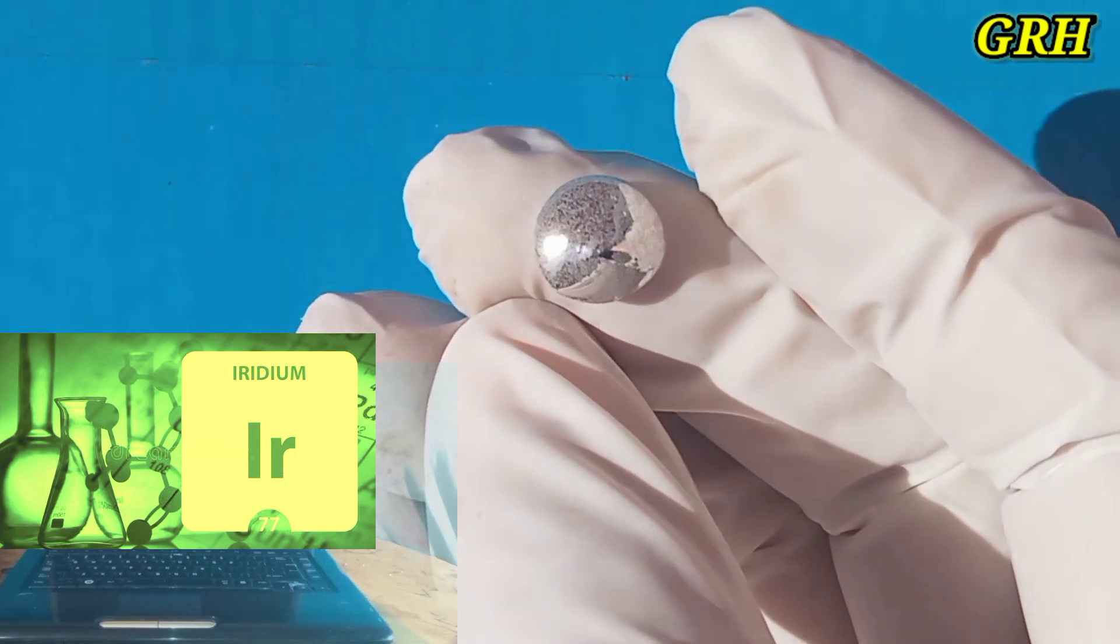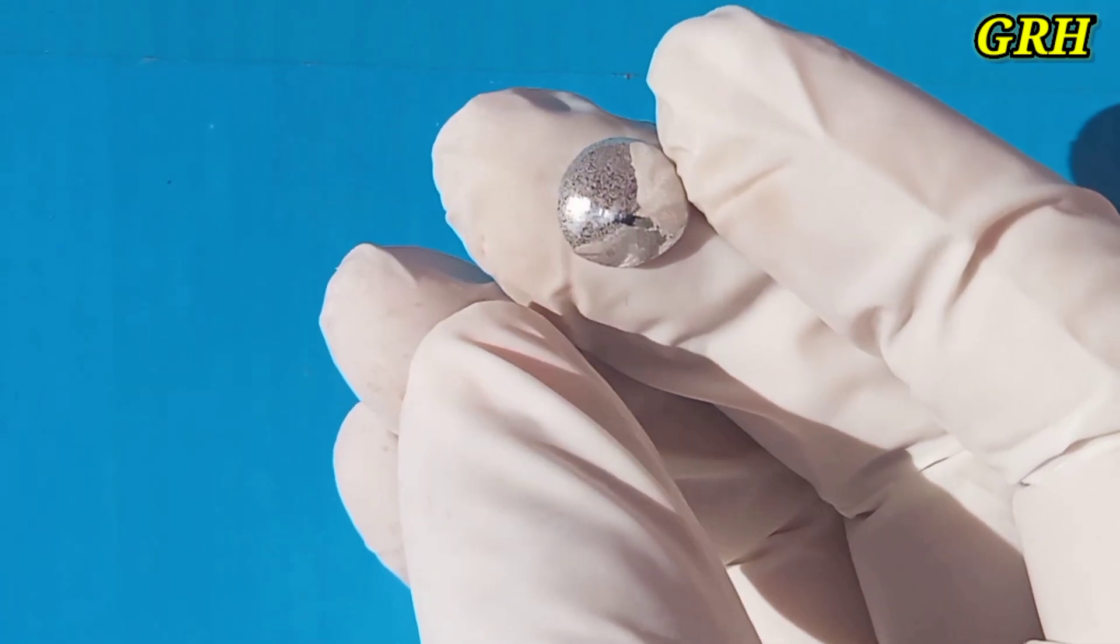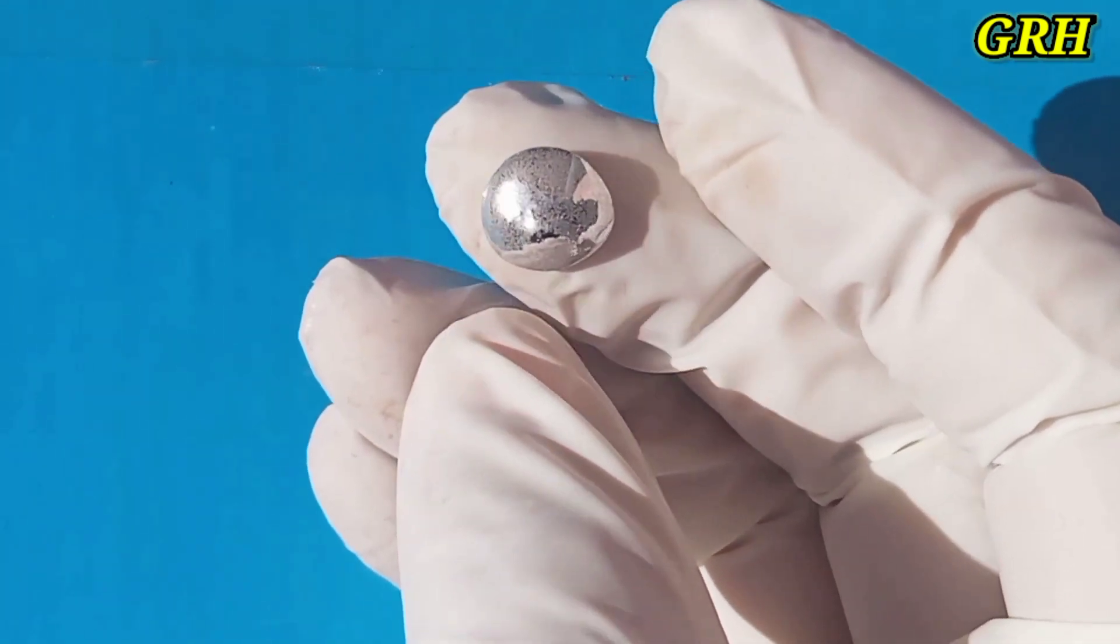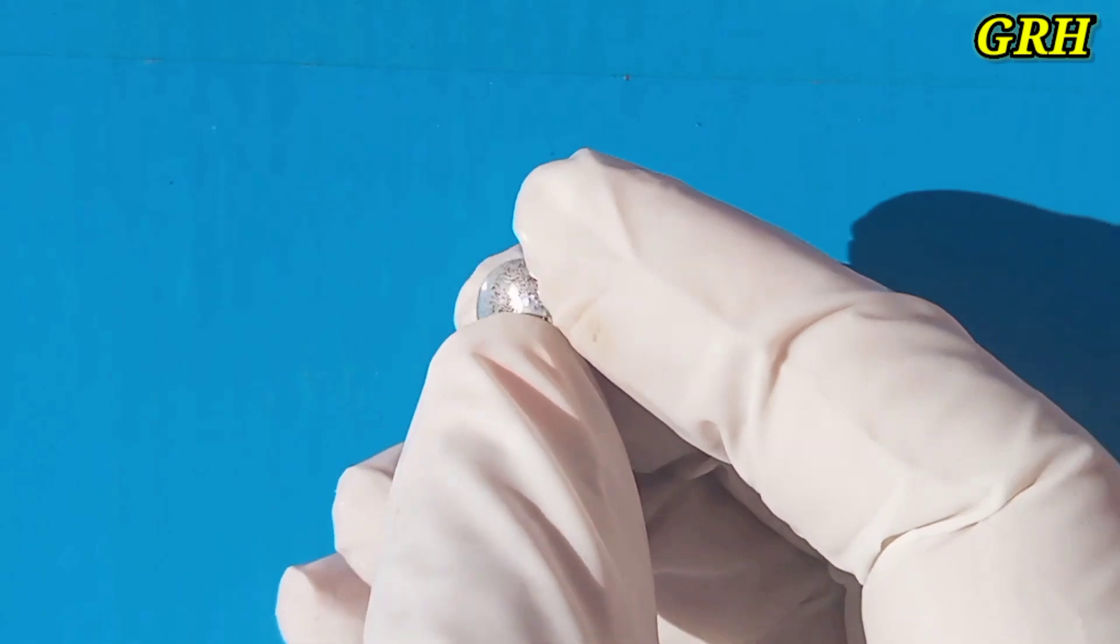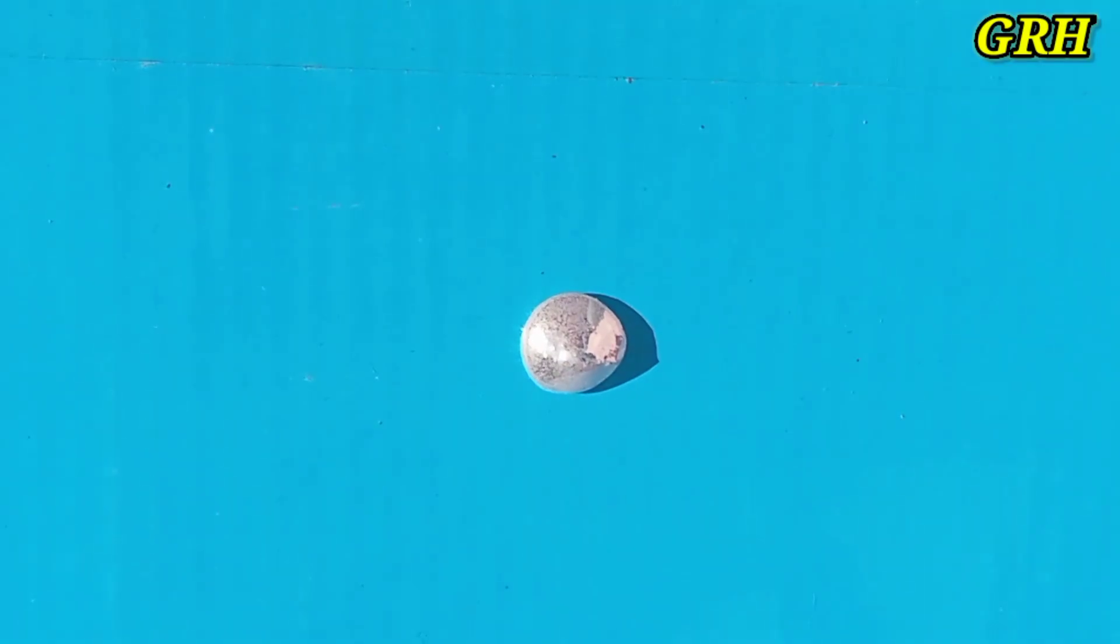On the other hand, it is much more abundant in meteorites. It is insoluble in all acids, including aqua regia, and cannot be melted under the blowpipe. Its melting temperature being 2,443 degrees Celsius.